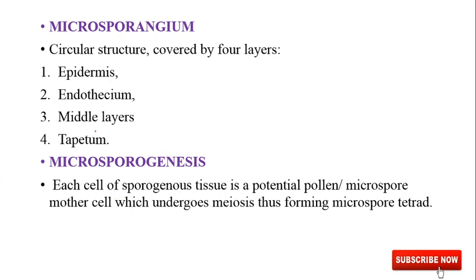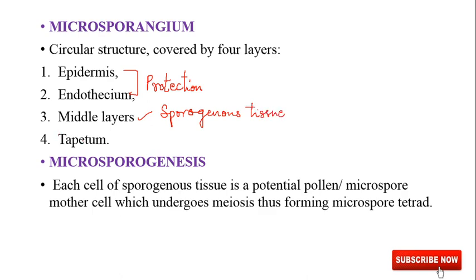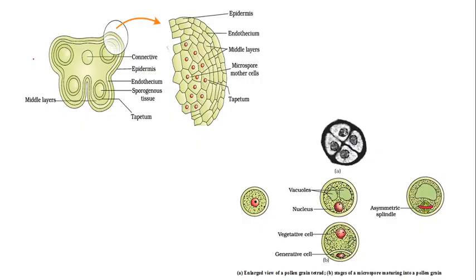Microsporangia has a circular structure and is covered by four layers. Epidermis and endothecium — both have a protection purpose; they are protecting the microsporangia. The middle layer consists of sporogenous tissue. These sporogenous tissue cells are microspore mother cells — they are potential pollen which will develop into the pollen grains. The tapetum functions to nourish the microsporangia and the developing pollen grains inside them.